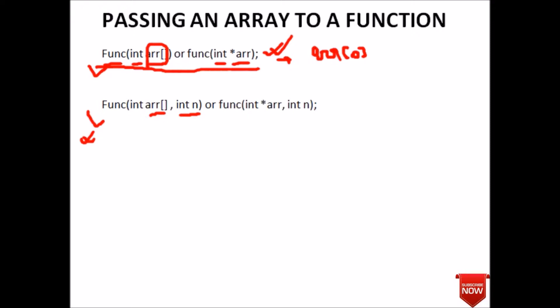In the first method, we have to write the size inside the definition and we take the size from the user. But in the second method, we are explicitly passing the size of the array as well. I have discussed that if we are passing the array name, it means we are passing the reference to the first index of the array, that is array[0].